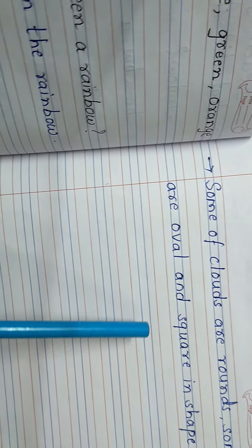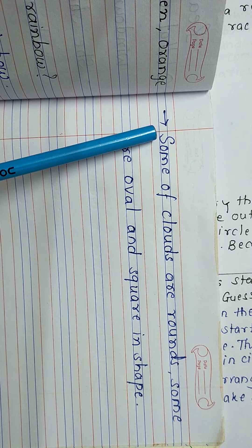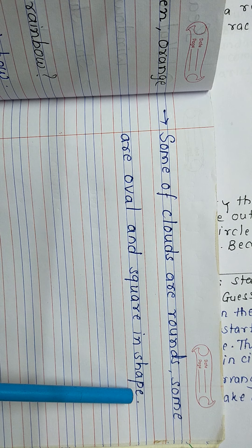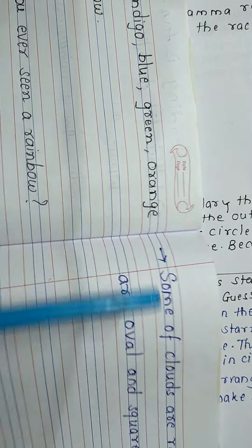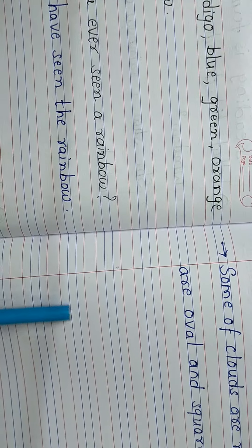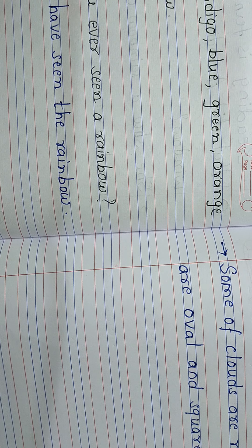These are all the questions and answers. Write them down in your notebook in good handwriting. Always start the first letter with a capital and at the end of the sentence don't forget to put a full stop. When there is a question, put a question mark at the end. I hope you understand today's session. We will meet in our next session. Till then, goodbye. Have a nice day. Thank you.